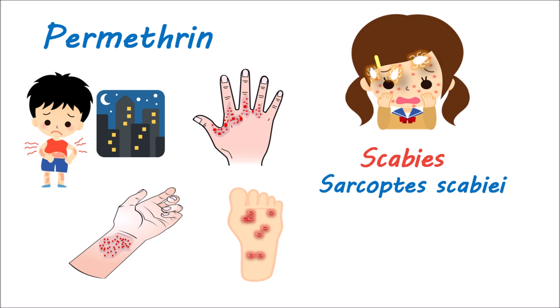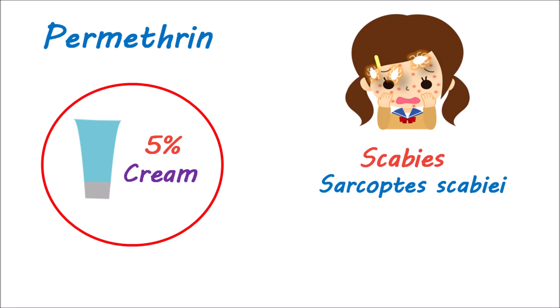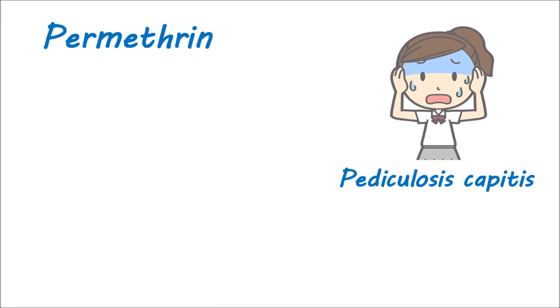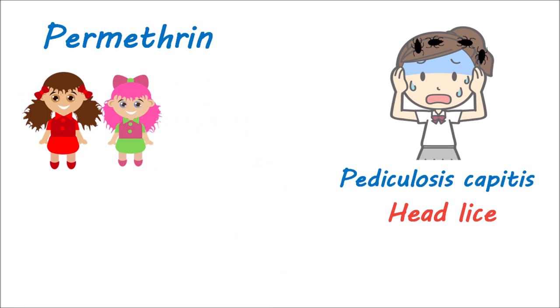Permethrin is available as a cream at 5% strength for treating scabies, where it kills living mites and their eggs. It can also be used to treat pediculosis capitis, commonly known as head lice. Lice infestations can spread easily from direct head-to-head contact with an already infested person, or they can also be spread through sharing chairs, pillows, bedding, and combs.